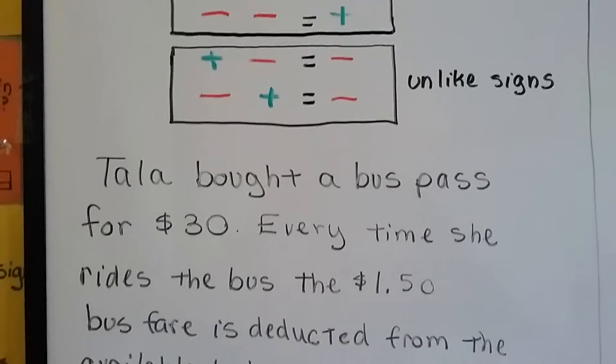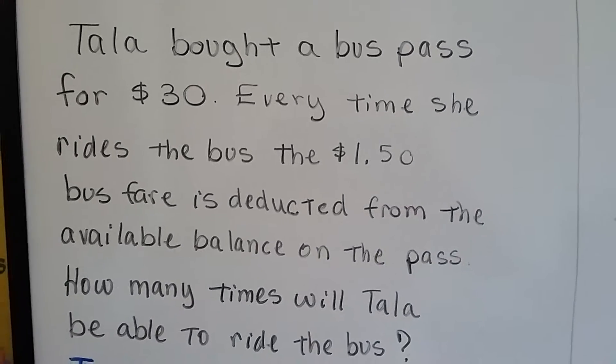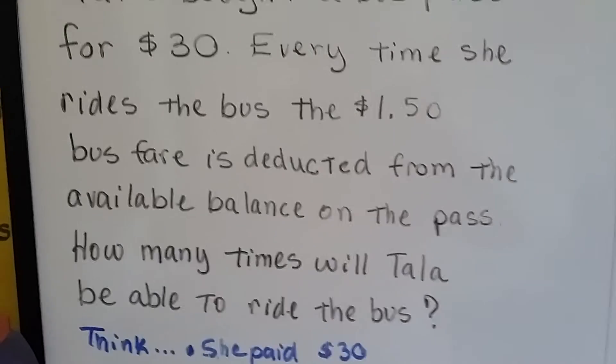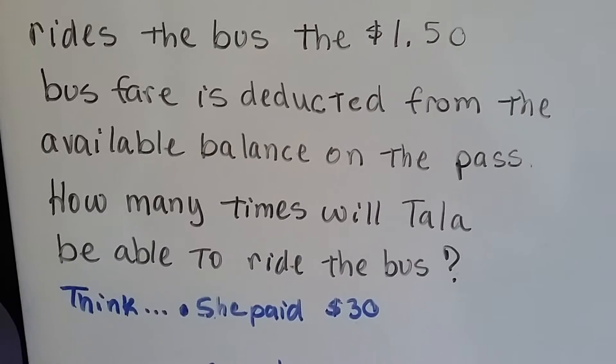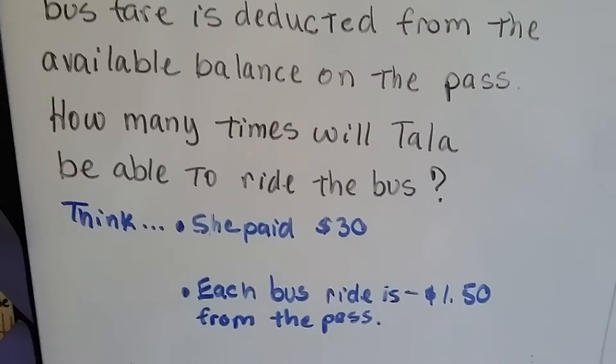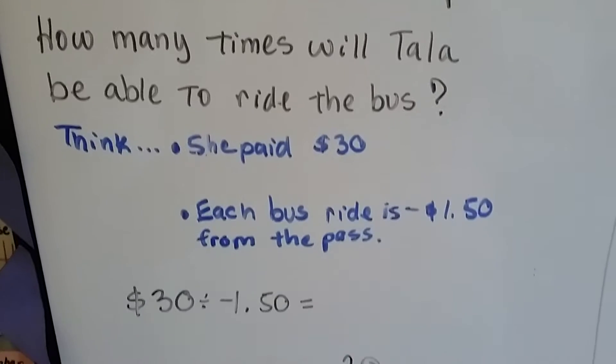Here's our word problem. Tala bought a bus pass for $30, and every time she rides the bus, the $1.50 bus fare is deducted from the available balance on the pass. How many times will Tala be able to ride the bus? Think: she paid $30, each bus ride is negative $1.50 from the pass.